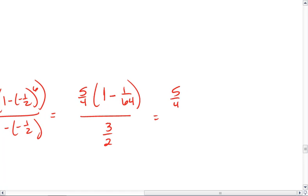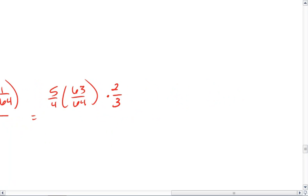Now I get 5 fourths times 63 sixty-fourths, all over 3 halves. And 3 halves is the same as multiplying by 2 thirds. A couple of things we'll reduce here. 2 and 4 reduces, so give me a 2 down here. 3 and 63 reduce. I get 21. And that's about it. So I get 5 times 21, which is 105, all over 2 times 64, which is 128.